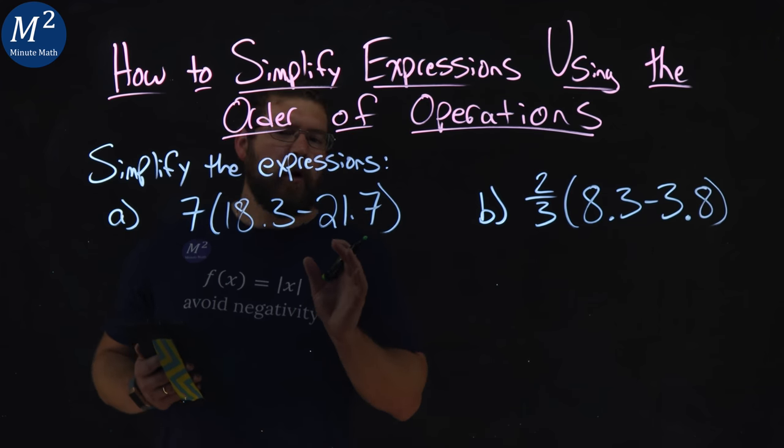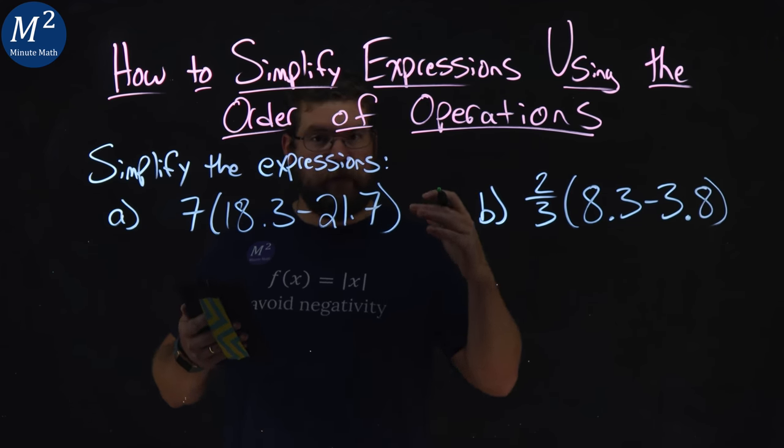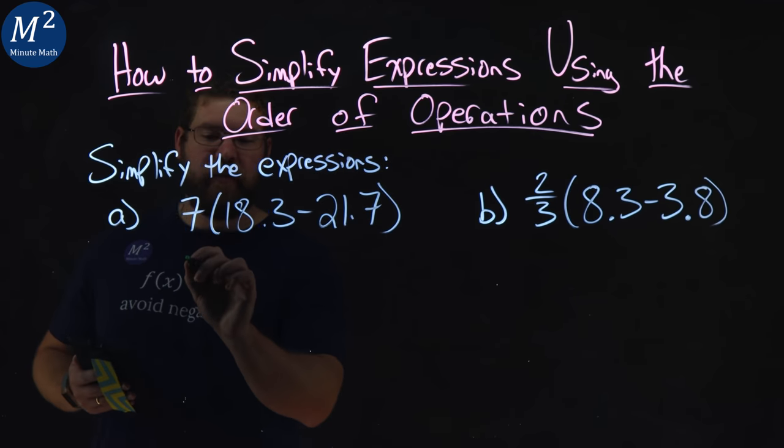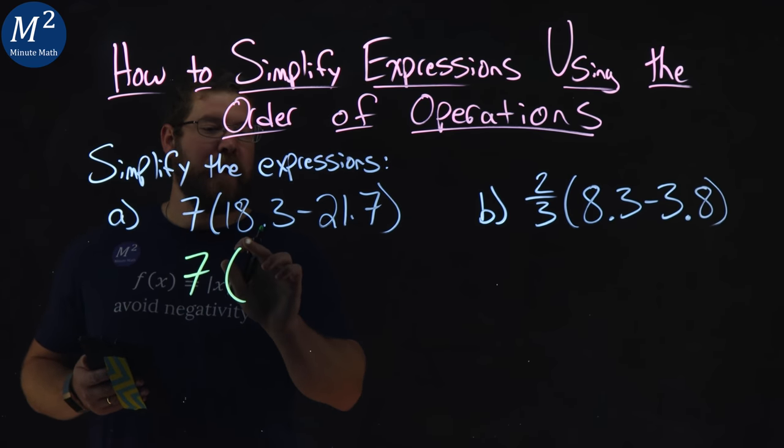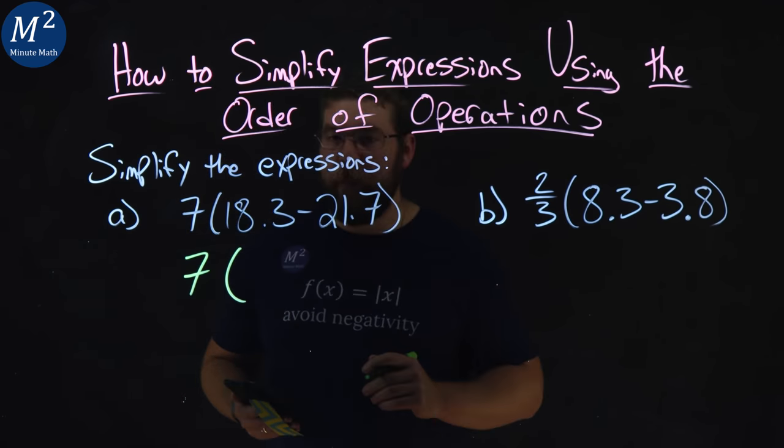Now, the order of operations tells us we have to deal with parentheses first. So we keep the 7 on the outside, and I'm going to subtract 18.3 minus 21.7.